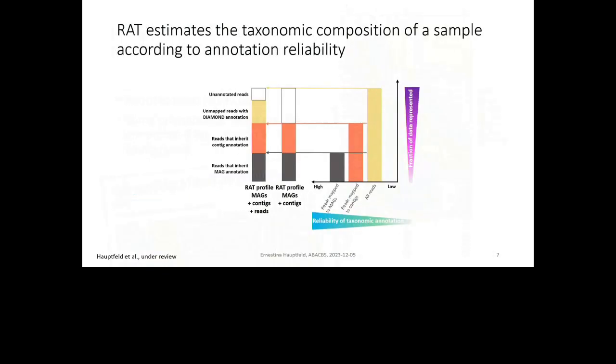And now, what does RAT itself do? How does it build the taxonomic profile? Well, it prioritizes the annotation of each read by reliability. So we map the reads, I map the reads back to all of the assembly and the MAGs. And then, if a read is associated with a metagenome-assembled-genome, then it automatically inherits the annotation of the MAG. And if a read is associated with a contig that is not in a MAG, then it will inherit the annotation of the contig. And only if the reads are not mapped, then we will annotate them directly.